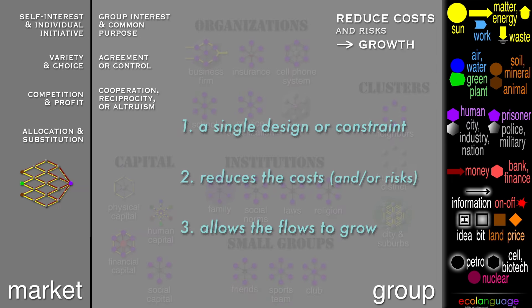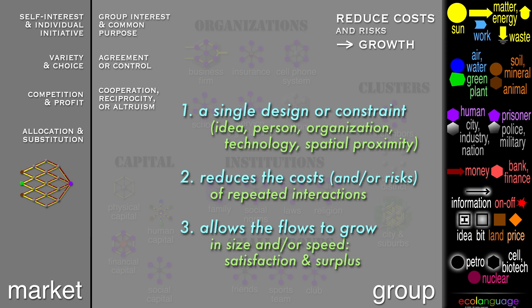In every case, a single design or constraint, which we are putting at the center, reduces the costs and or risks, which allows the flows to grow. We can elaborate this further, and say that a single design or constraint — which may be an idea, person, organization, technology, or spatial proximity — reduces the costs and or risks of repeated interactions, which allows the flows to grow in size and or speed, causing satisfaction and surplus.